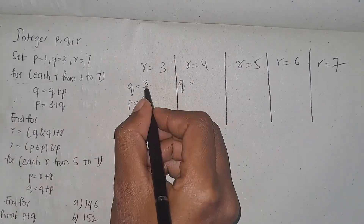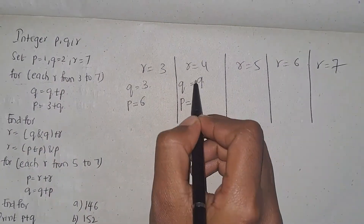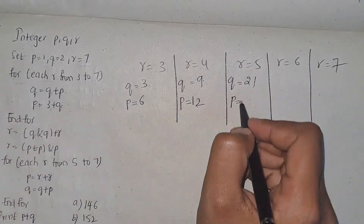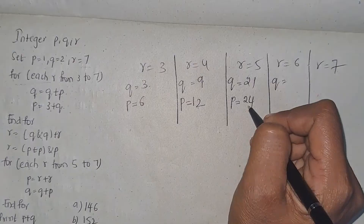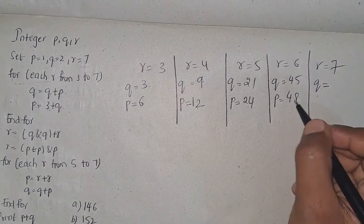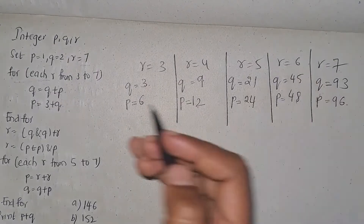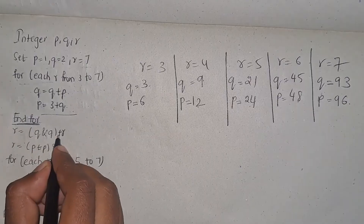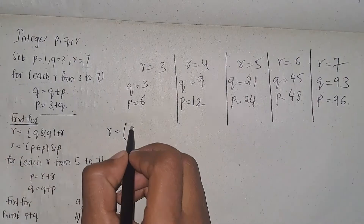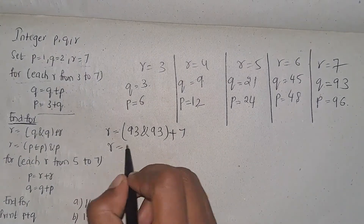q is 3, so q equals q plus p: q becomes 9. p equals 3 plus q which is 12. Then q becomes q plus p equals 21, and p becomes 3 plus q equals 24. Again q becomes q plus p equals 45, and p becomes 3 plus q equals 48. Finally q becomes q plus p equals 93, and p becomes 96. After completing the for loop, r equals q bitwise AND 93 plus r where r is 7.